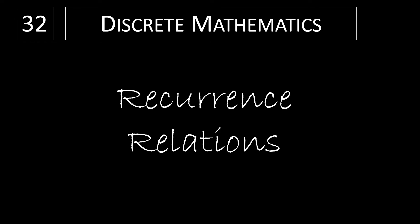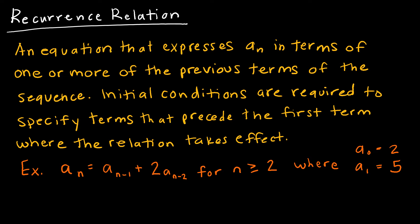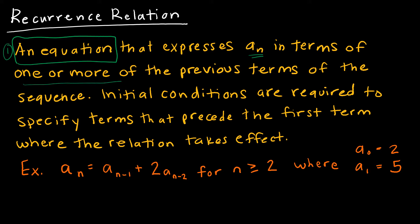In this video we're going to explore recurrence relations. A recurrence relation is just another way to express how to find the next values in a sequence. It has two parts. The first part is an equation that tells us how to get to the next term, expressing a(n) in terms of one or more of the previous terms — sometimes one term before it, sometimes two or three terms before it.